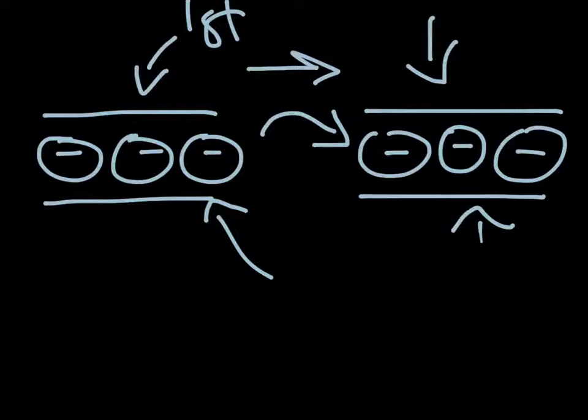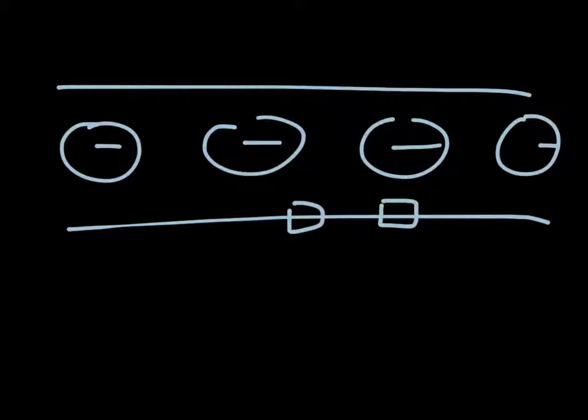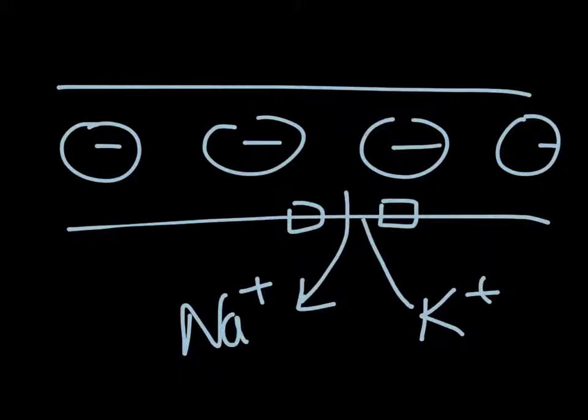What happens during the refractory period is that sodium-potassium pumps will actively transport sodium ions outside of the axon and potassium ions back into the axon, so the concentration on the inside is at a higher concentration than outside.